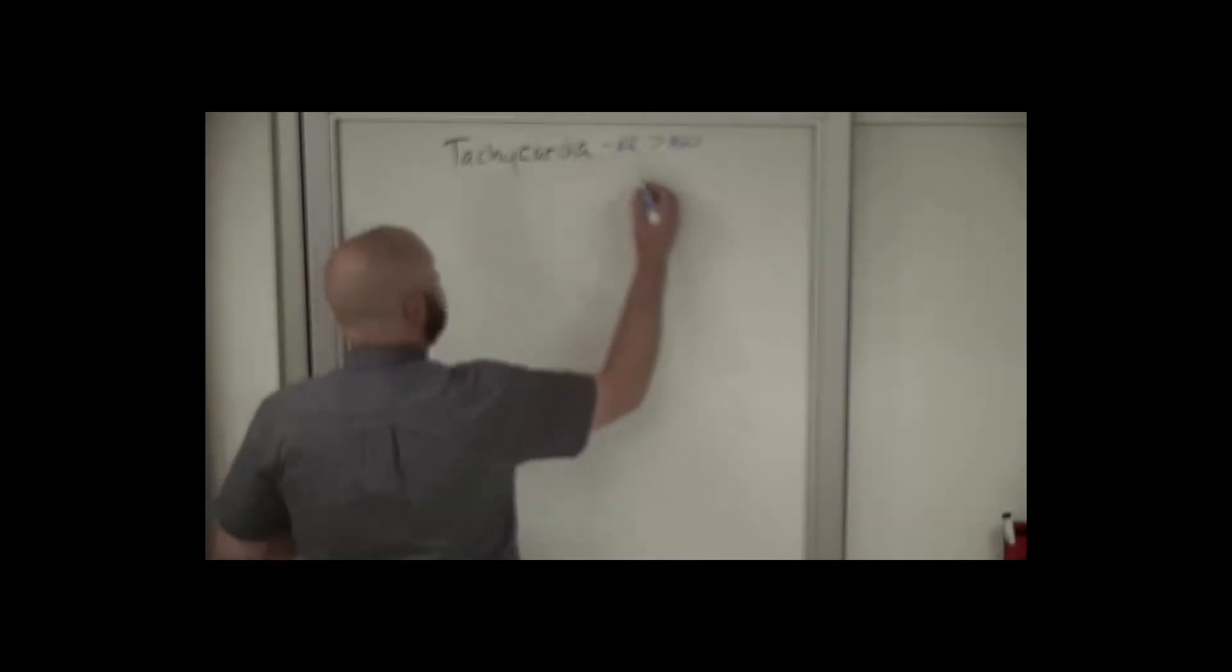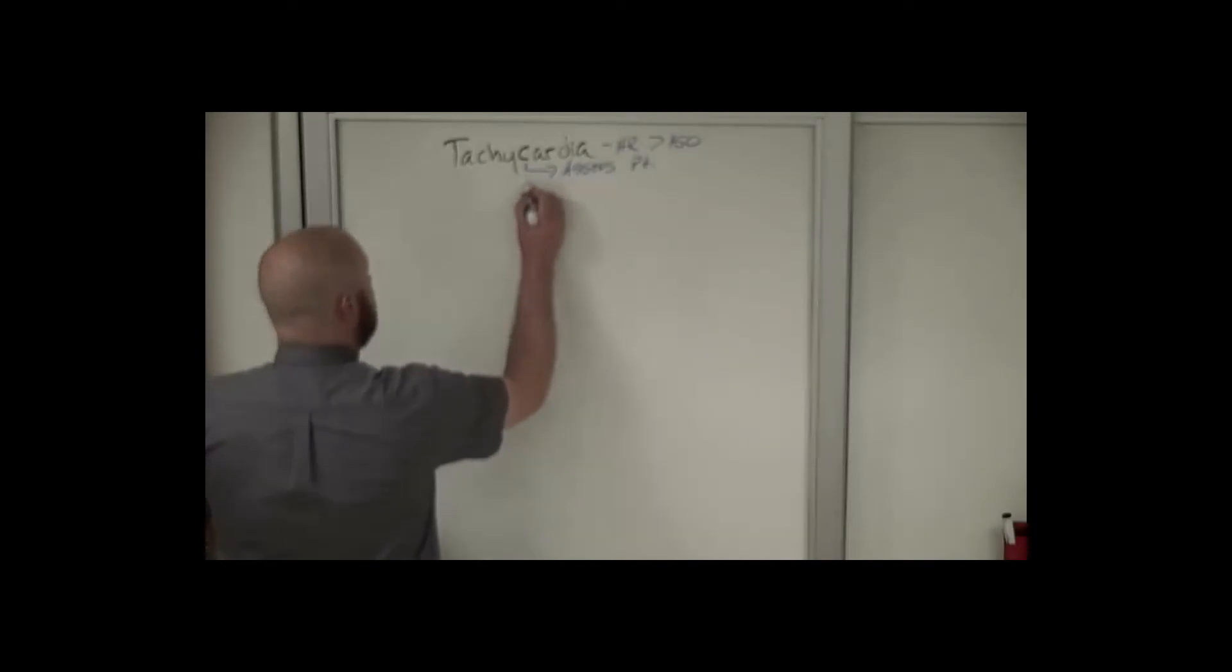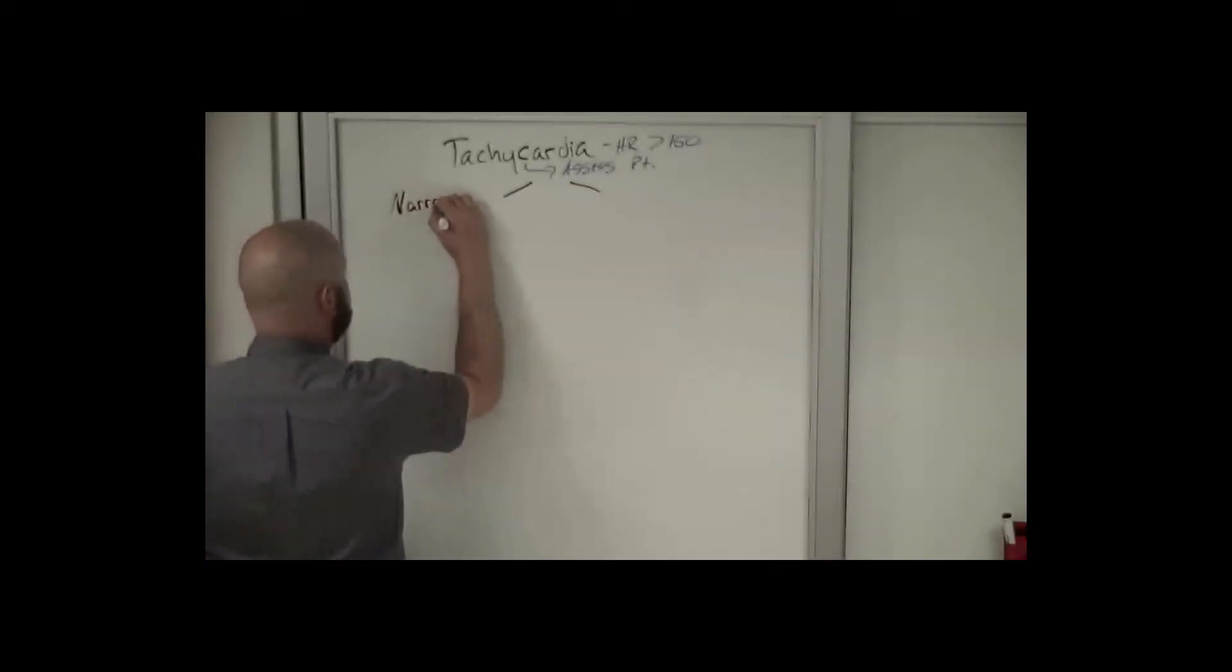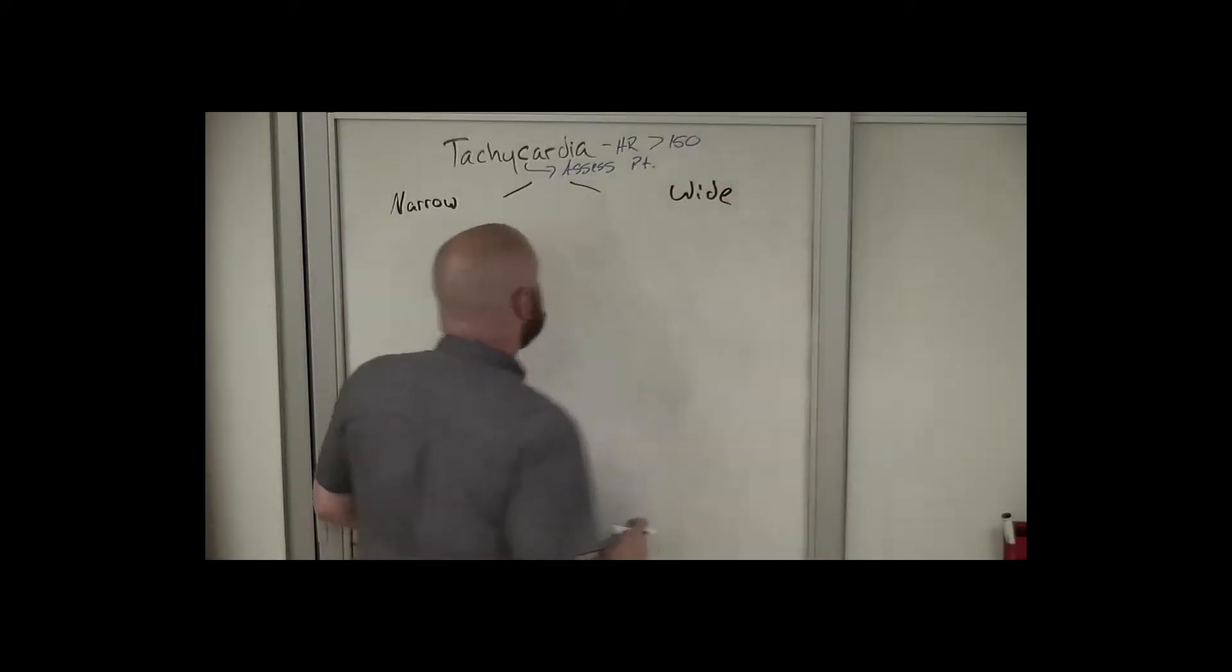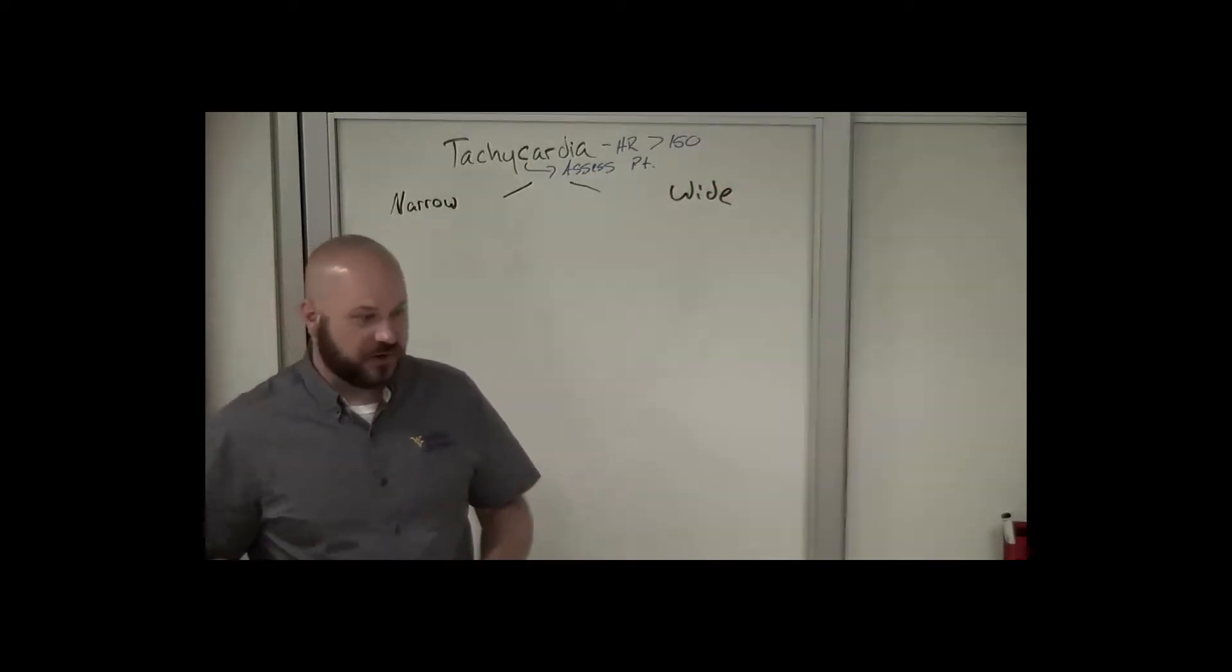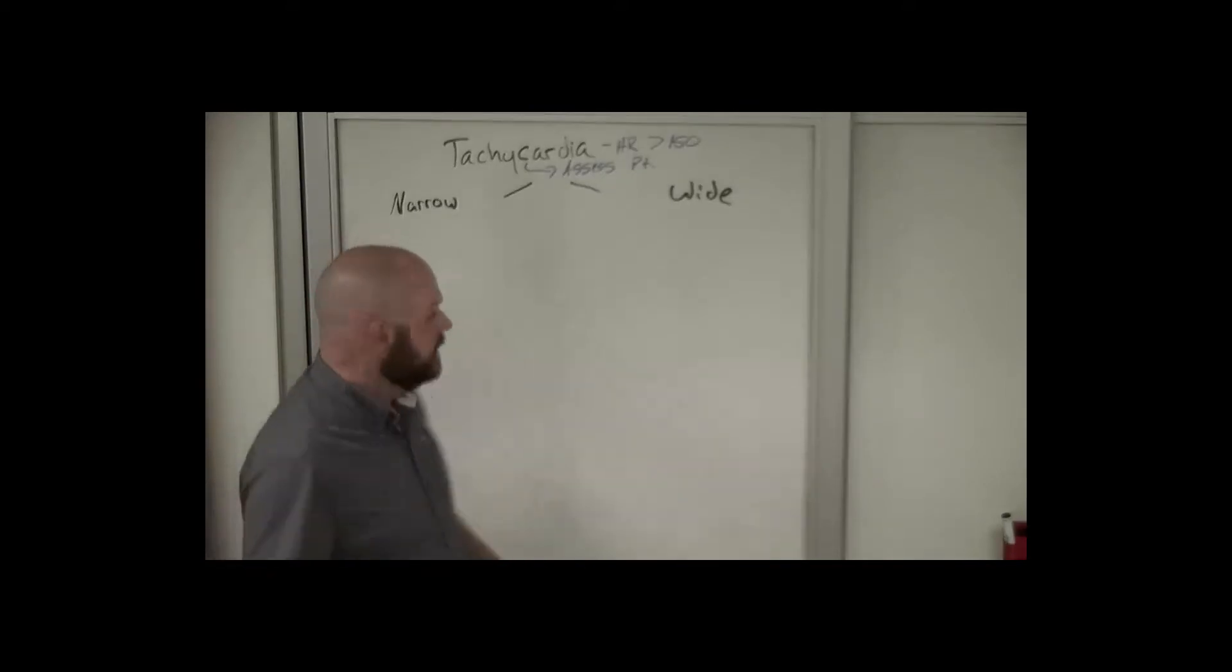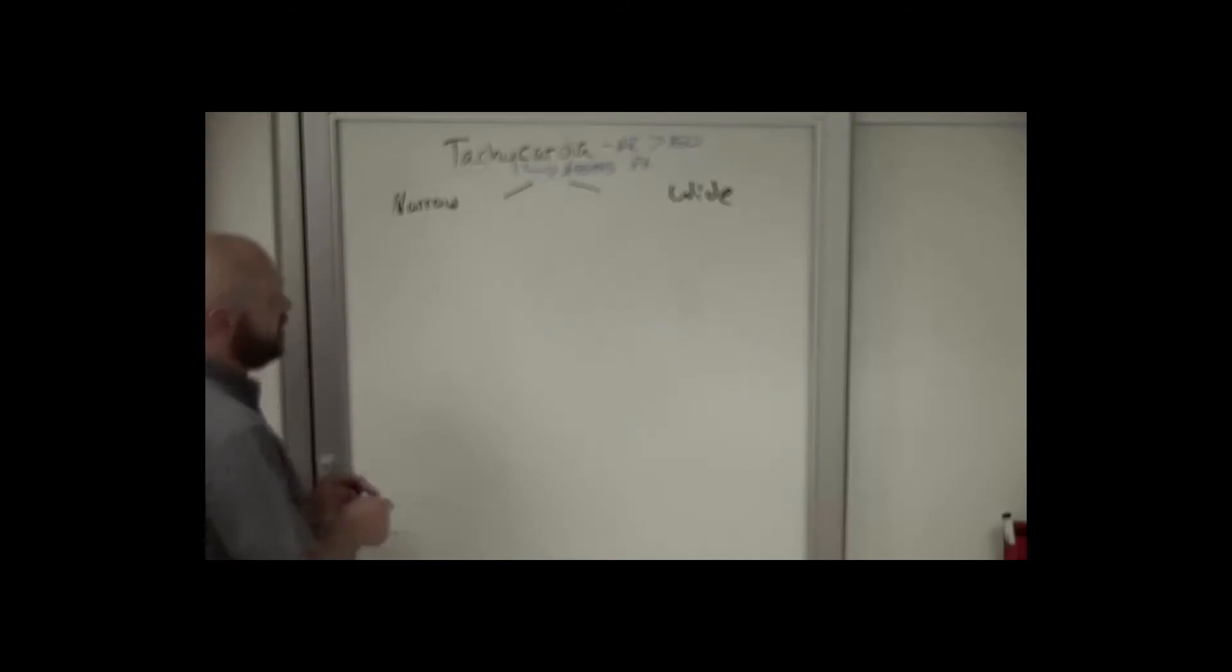So if this is tachycardia for tachycardia's sake and this runaway tachycardia that we're concerned about, we want to look at first things first. What's the most obvious thing you're going to notice when you put this patient on the monitor? Is their heart rate narrow or wide? That's a really easy one to tell - you just look at the monitor. Once we've decided whether it's narrow or wide, we're going to start breaking it down a little bit more.